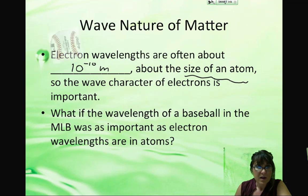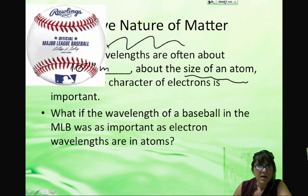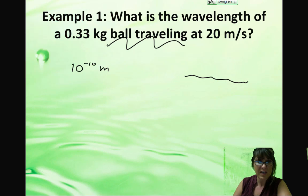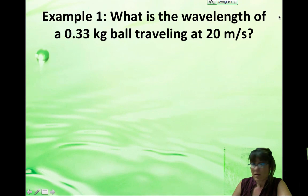Imagine if a baseball in the Major League Baseball was as important as the electron wavelengths are in atoms. So if this wave was bigger, then as the pitch was coming at the batter, it would have a wavelength, and then the batter would have a wavelength, and the bat itself would have a wavelength, and when you hit the ball, it would wave around while you're trying to catch it. Boy, that could really complicate the game of baseball, couldn't it?